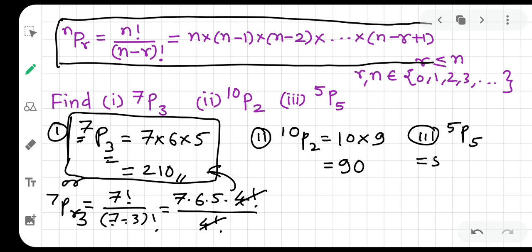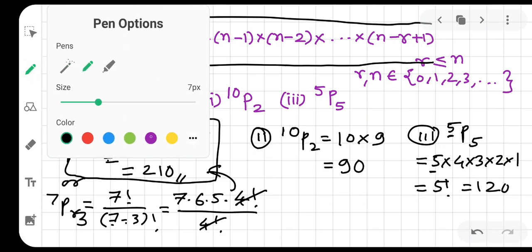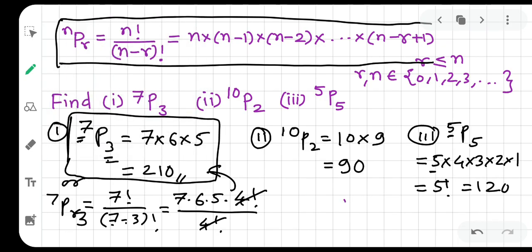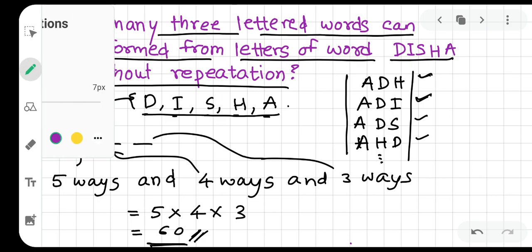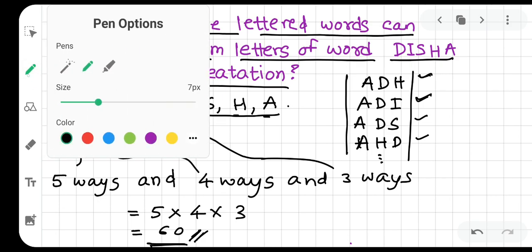Let's do the second one: 10P2 is simply 10 into 9, which is 90. Let's do the third one: 5P5 is simply 5 into 4 into 3 into 2 into 1, which is 5 factorial, which is 120. Here we learn an important property: nPn equals n factorial.